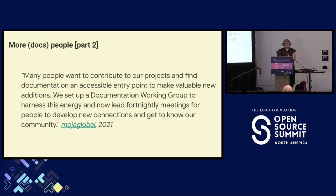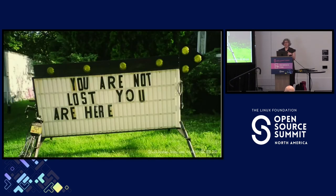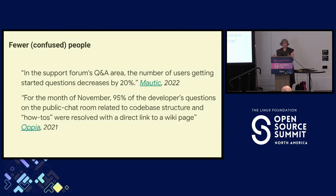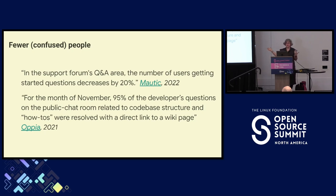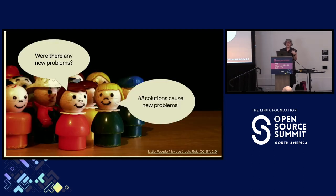But docs can't help if people can't find them. Mojo Global set up a documentation working group and wanted to make an accessible entry point. A lot of projects over the whole history of Season of Docs have mentioned improving the organization of their docs. Better, more findable docs means fewer confused people, less stress on maintainers and communities — it helps users help themselves. Mautic found that their questions dropped by 20%. Apia had an impressive stat: 95% of their questions in their public chat room were able to be answered with a direct link to a wiki.